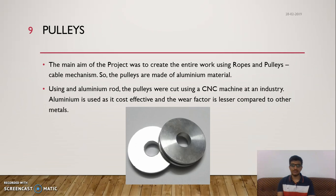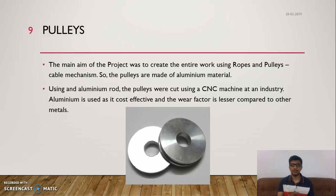Pulleys look like circular discs. The pulleys in our project are made using aluminium — long rods that have been cut using CNC machines at a workstation into 50 mm diameter discs, in order to properly fit the nylon rope and make the curtains open and close easily. We used a CNC cutting machine because the cutting is far more accurate than regular hand methods.